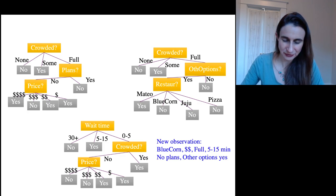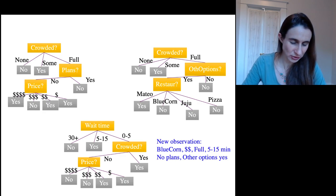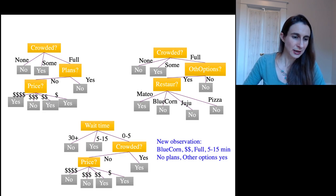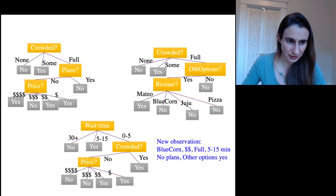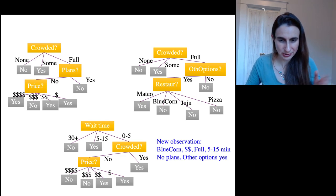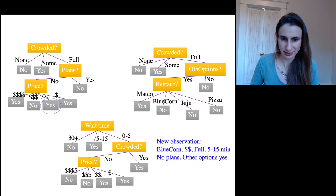So the first thing we ask for the first tree, the one all the way on the left, is whether the restaurant is crowded. And it is full. So we go to the right. And then does the customer have other plans? No, they don't. And the price is two dollar signs. And so we say yes, the customer would wait.